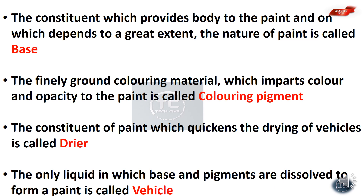Examples of base used in paint include: white lead, zinc white, red lead, iron oxide, titanium white, and lithophone. These are the base materials — the bottom or body of the paint.